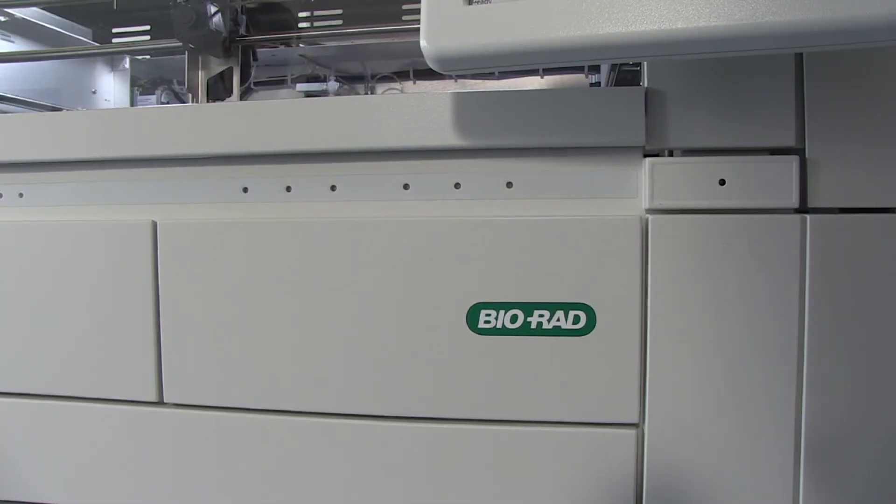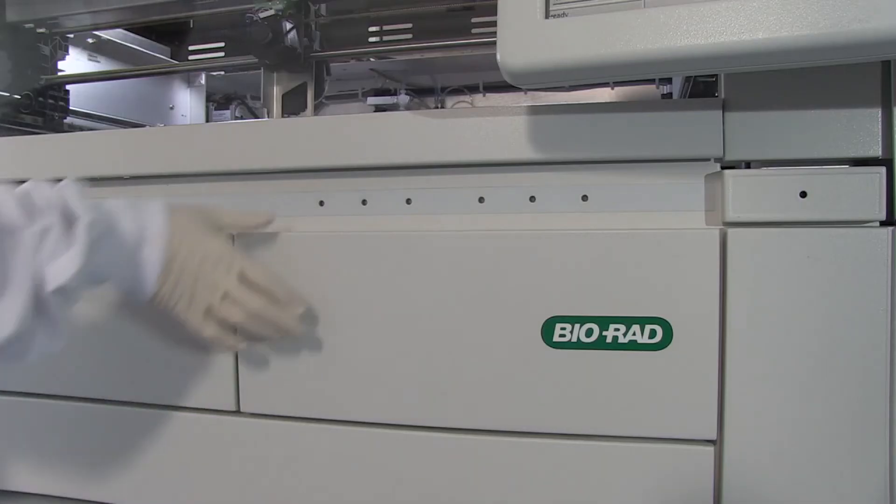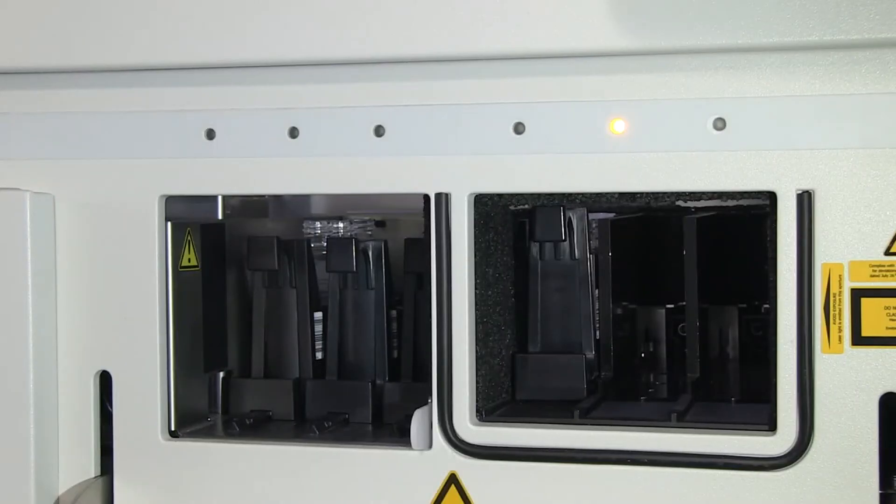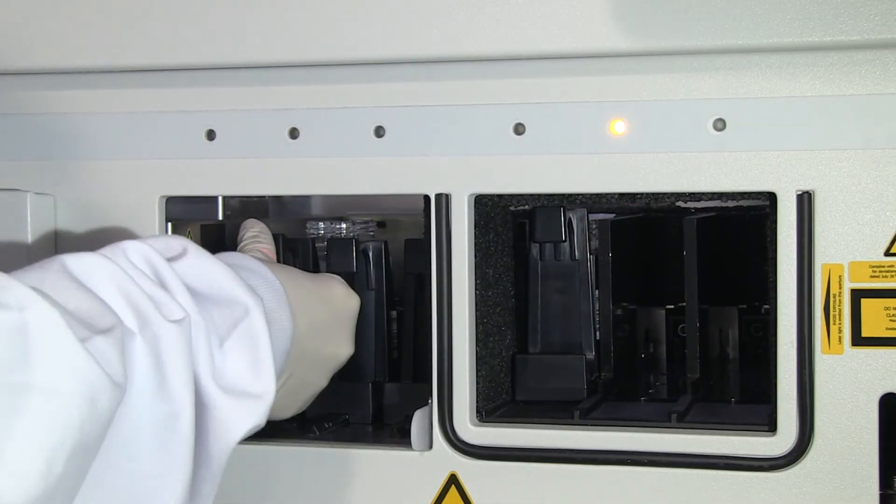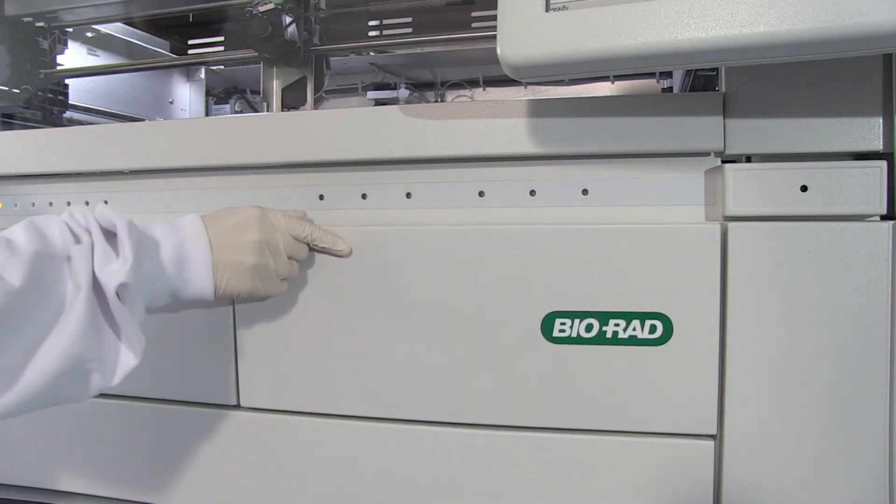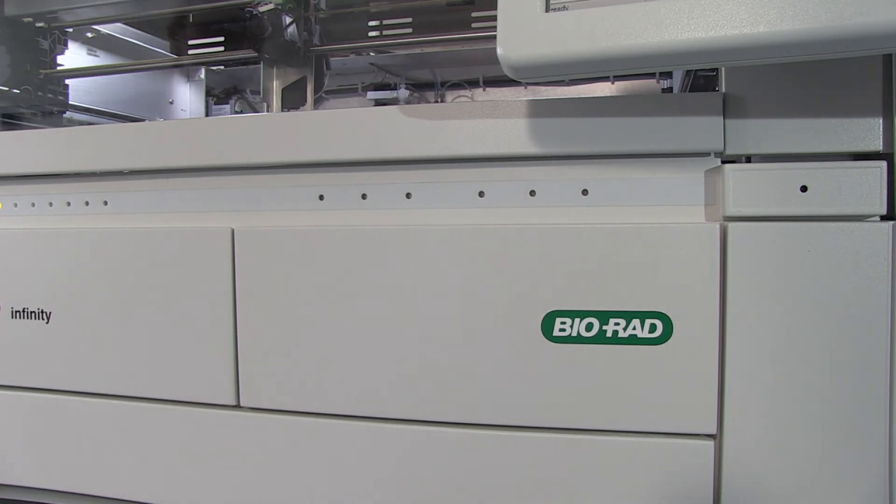Reagents may be removed at any time when the Tango Infinity is in ready status. To unload a reagent rack, open the door of the reagent bay. Unlock the reagent rack by pushing it. Pull the reagent rack out from the reagent bay. After all reagent racks are unloaded, close the door of the reagent bay.